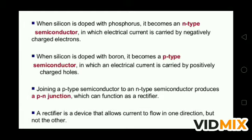When silicon is doped with boron, boron has only three electrons in its outer shell. When doped with silicon, one hole is created where no electron is present. The hole is considered positive because the electron has left from there. This space is termed a hole, and the hole is considered positive. When pure silicon is doped with a trivalent element like boron, it forms a P-type semiconductor. When silicon or germanium is doped with a pentavalent element, it forms an N-type semiconductor.